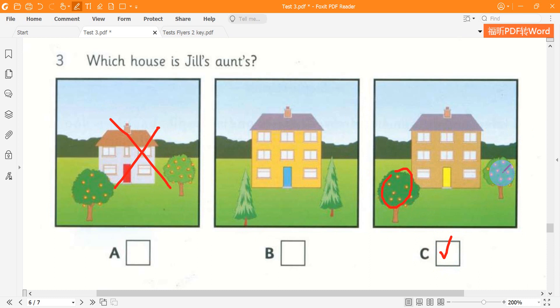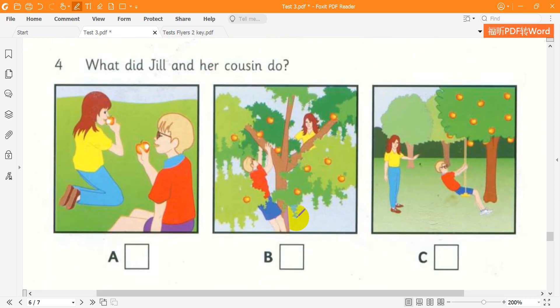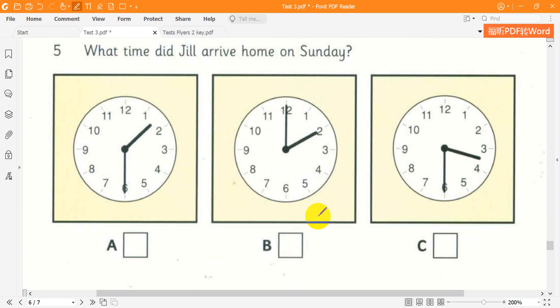Question 4. What did Jill and her cousin do? We've got a swing on one of the trees. We played on that. Was it sunny on Saturday? No, it wasn't.